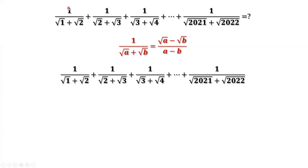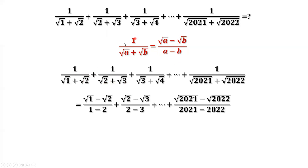Apply this formula for each term. For the first term, a equals 1 and b equals 2. For the second term, a equals 2 and b equals 3. Substituting 1 over (square root of a plus square root of b) by (square root of a minus square root of b) over (a minus b): the first term becomes square root of 1 minus square root of 2, divided by 1 minus 2. The next term is square root of 2 minus square root of 3, divided by 2 minus 3. The last term is square root of 2021 minus square root of 2022, divided by 2021 minus 2022.